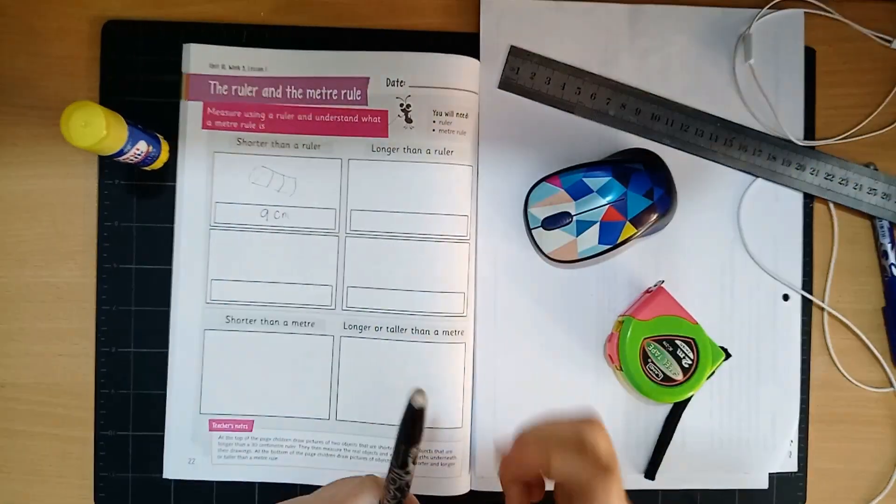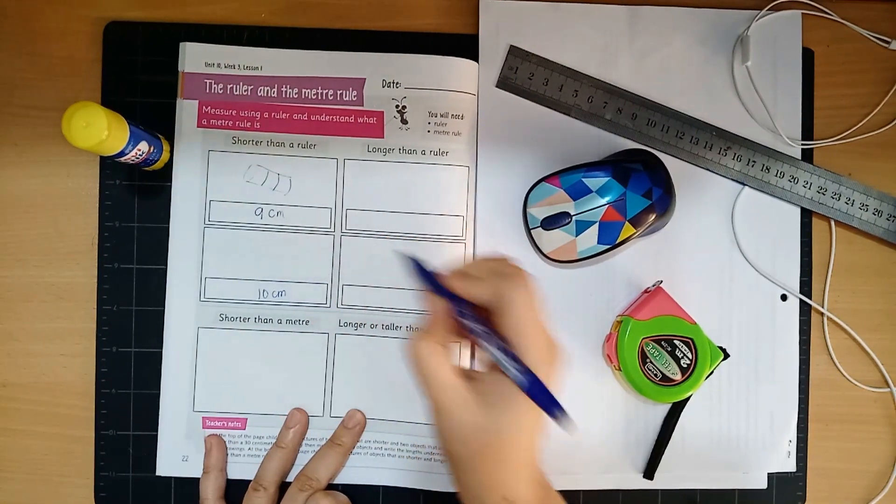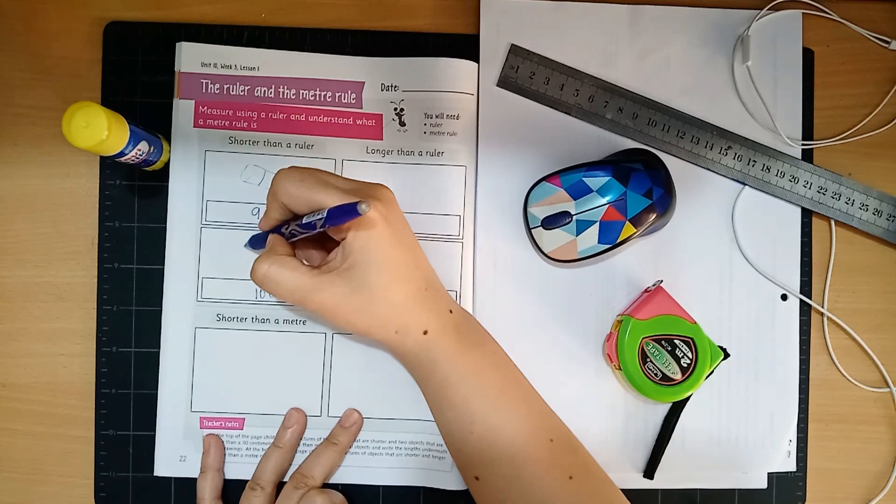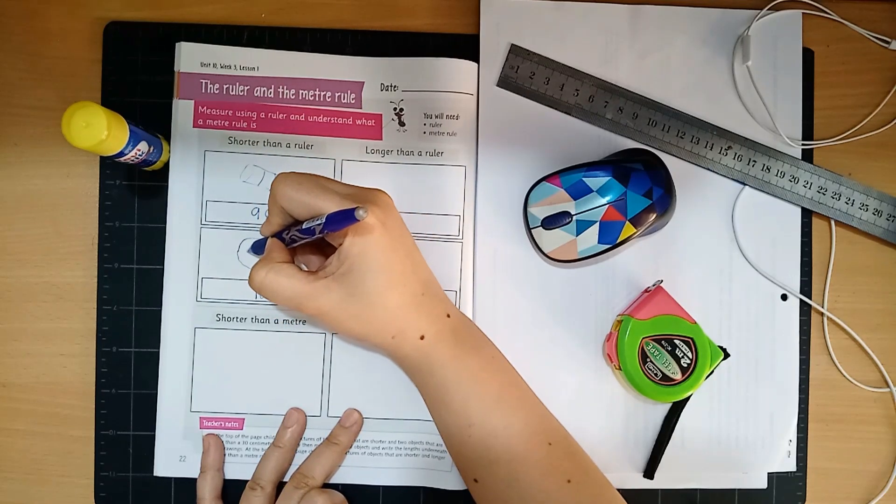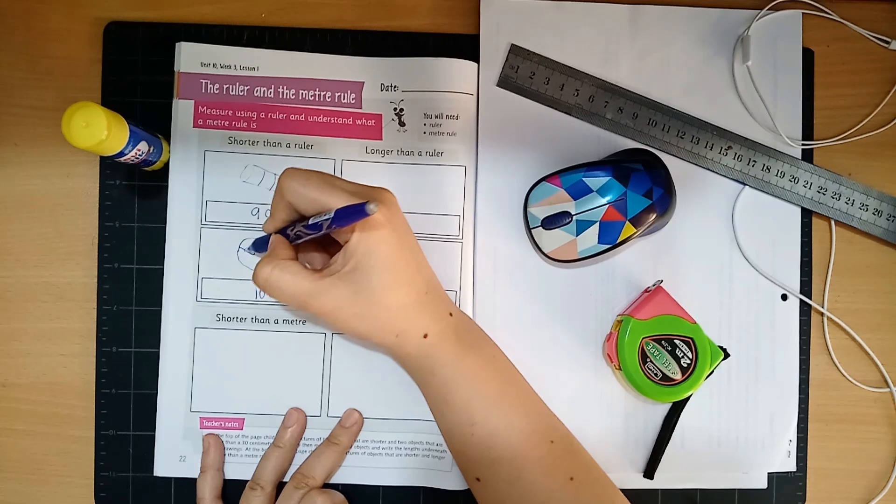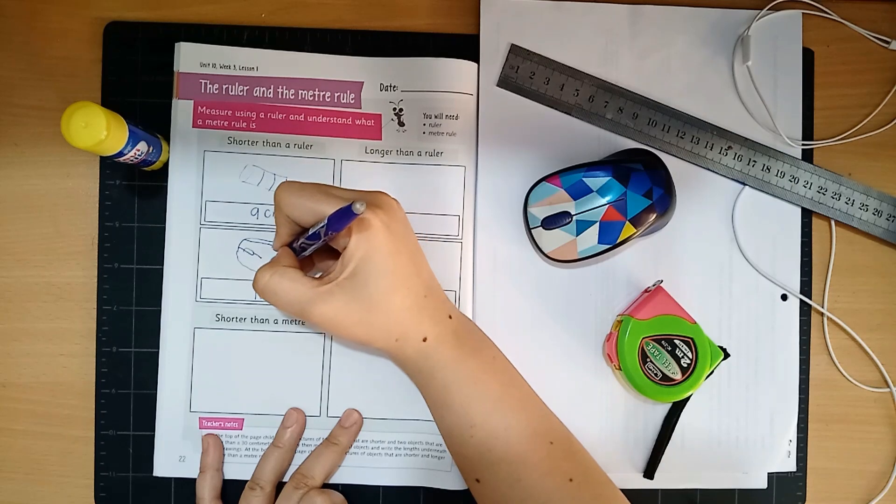So I'm going to write 10 centimeters over here and I'm going to draw the mouse. The mouse looks like that. Okay and I'm going to color it later.